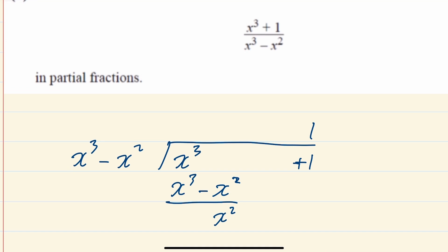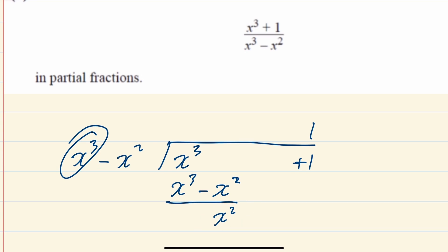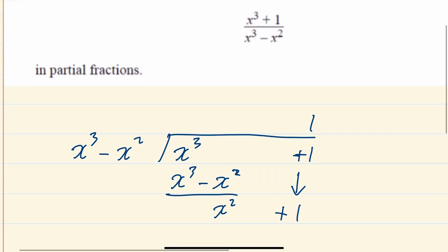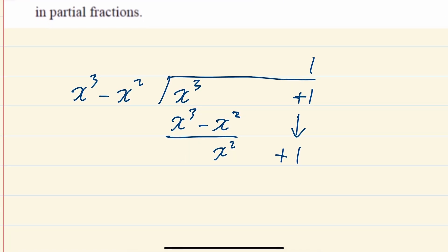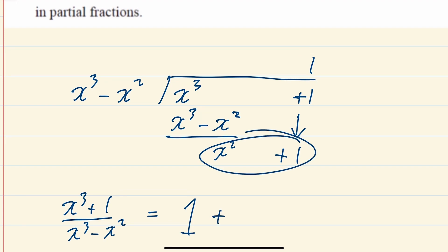That's as far as you can go because x³ would not go into x², so you just bring the +1 down as well. So when you divide, what you've shown is that (x³+1)÷(x³−x²) goes in one whole time — that's the 1 up top — and the remainder is x²+1 all over x³−x².